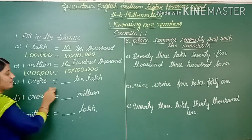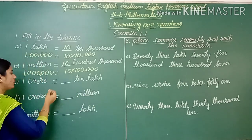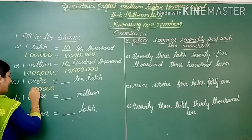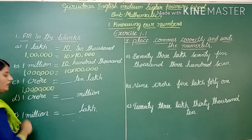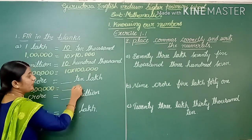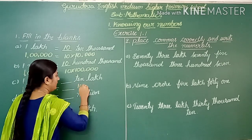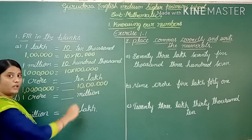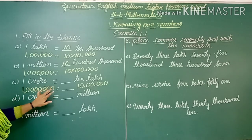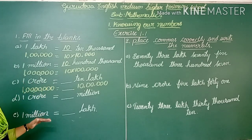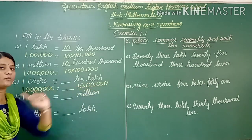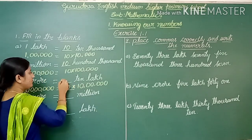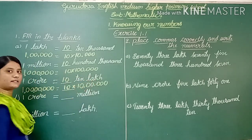Third: 1 crore is equal to blank 10 lakhs. Writing 1 crore in numerals gives 1,00,00,000, which has 7 zeros. In 10 lakhs there are 6 zeros, so the remaining 1 zero means we multiply by 10. Therefore 10 × 10 lakhs equals 1 crore.